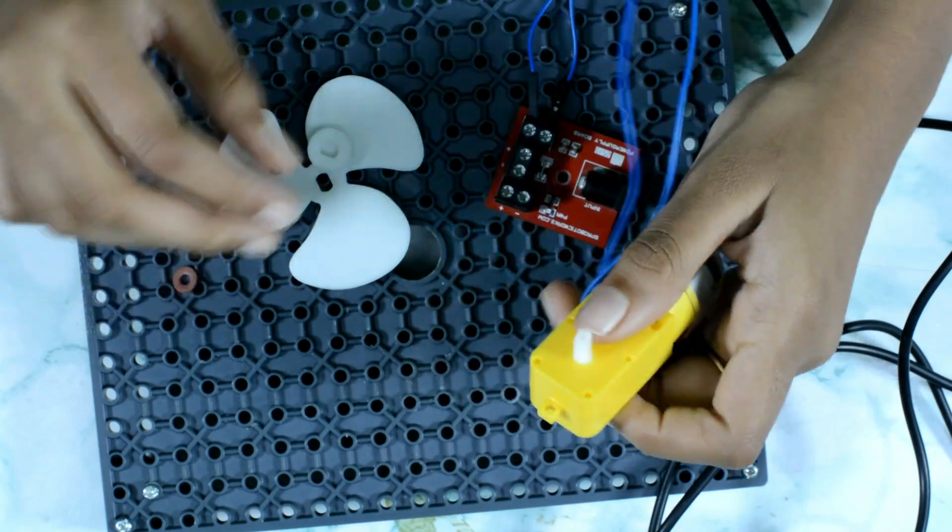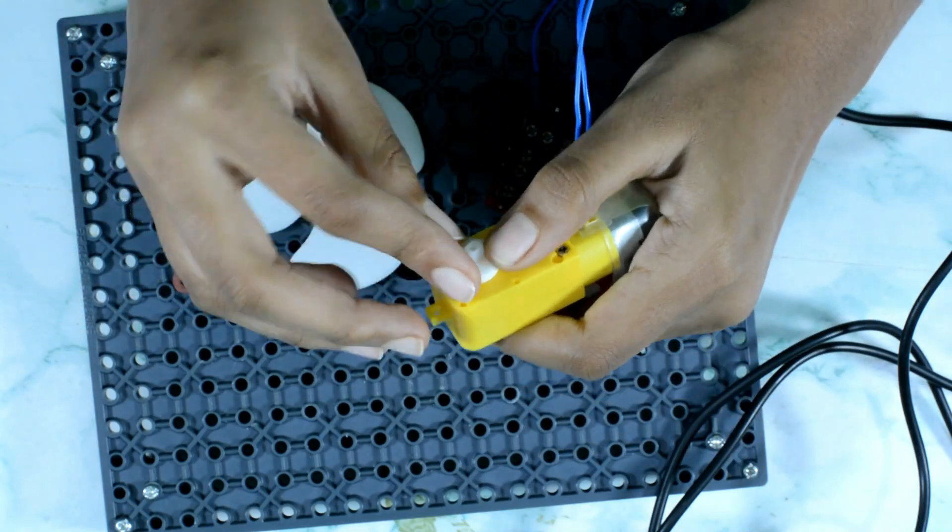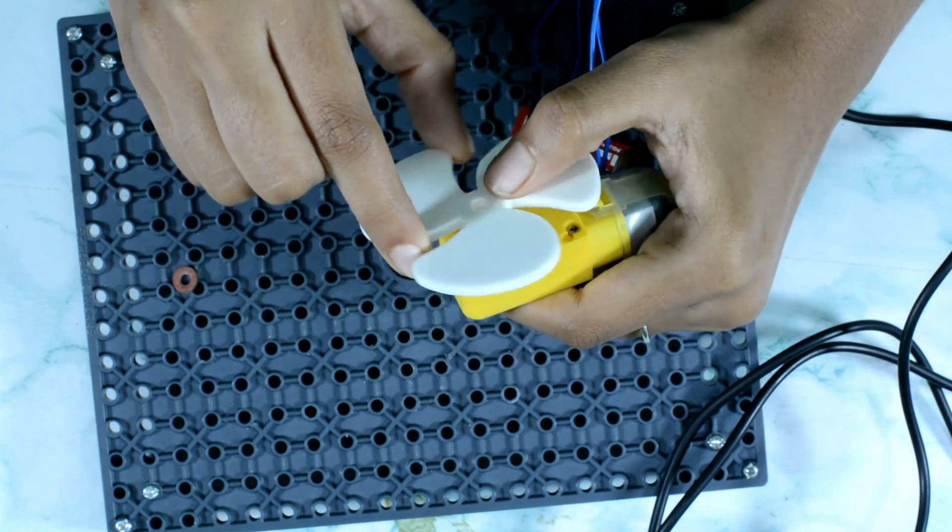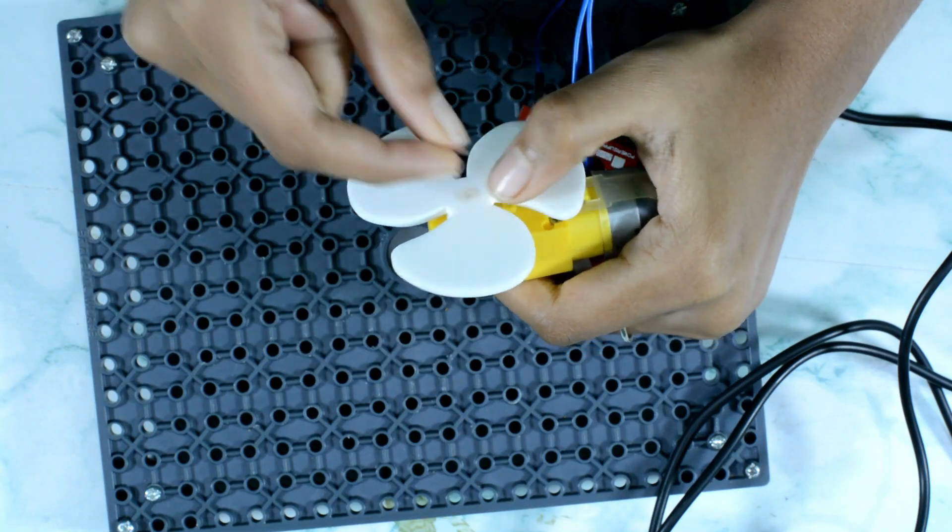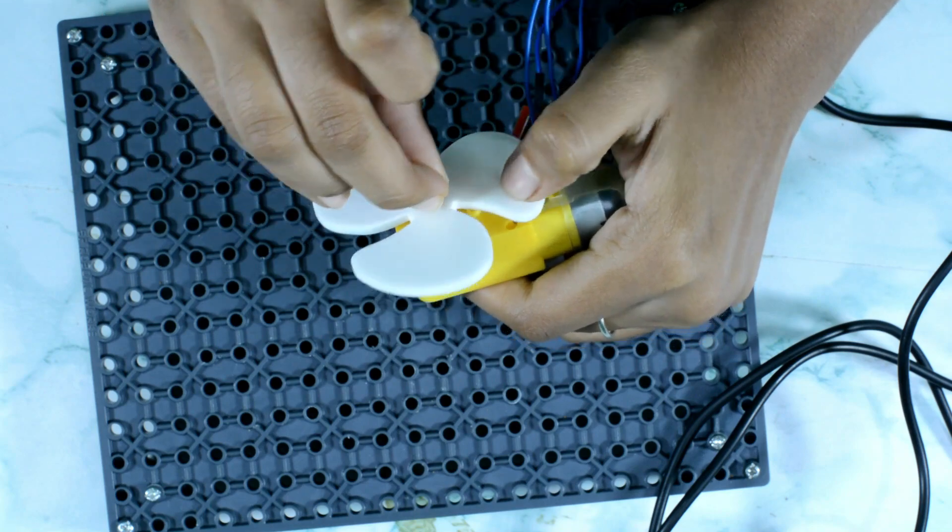Let's connect this. First, let's place this acrylic washer and then the fan. Before fixing it with the screw, we'll add the fiber washer here, and then let's fix the screw.